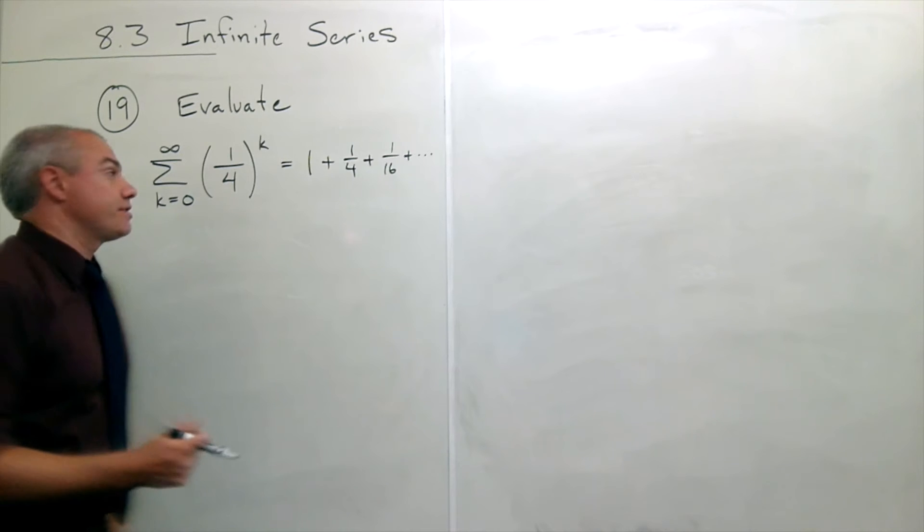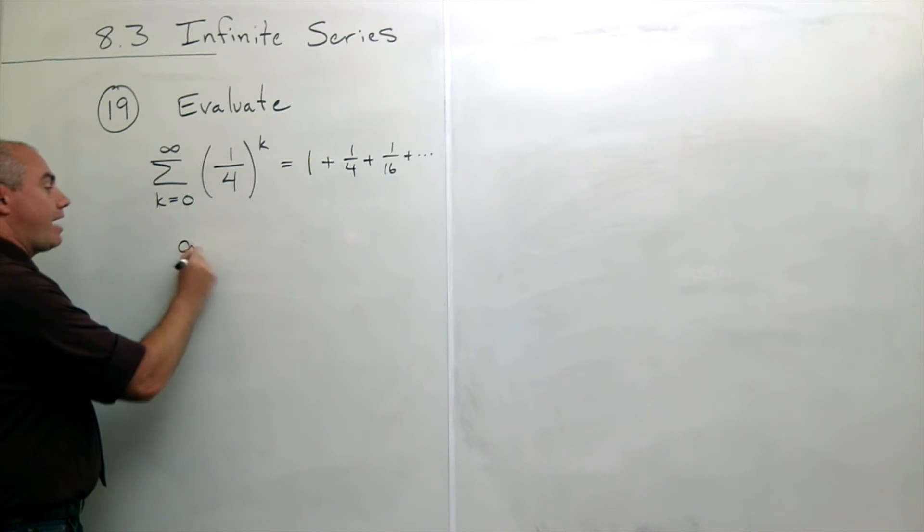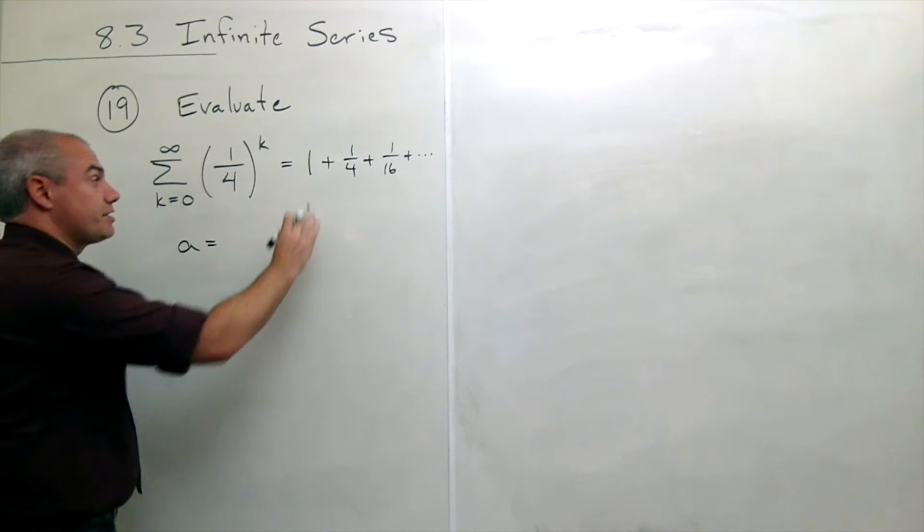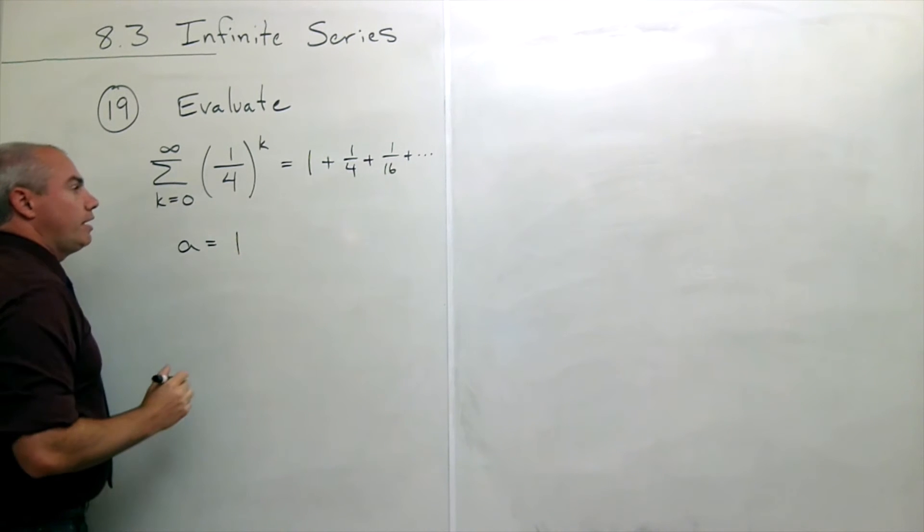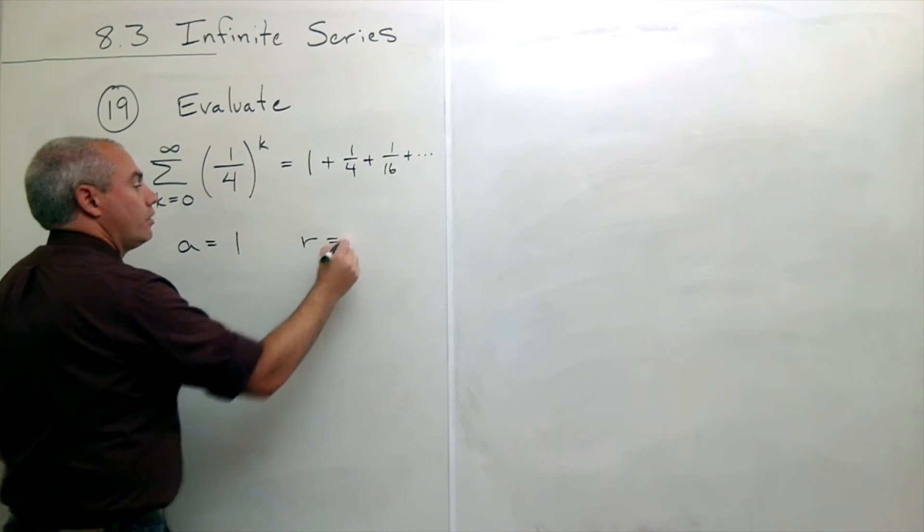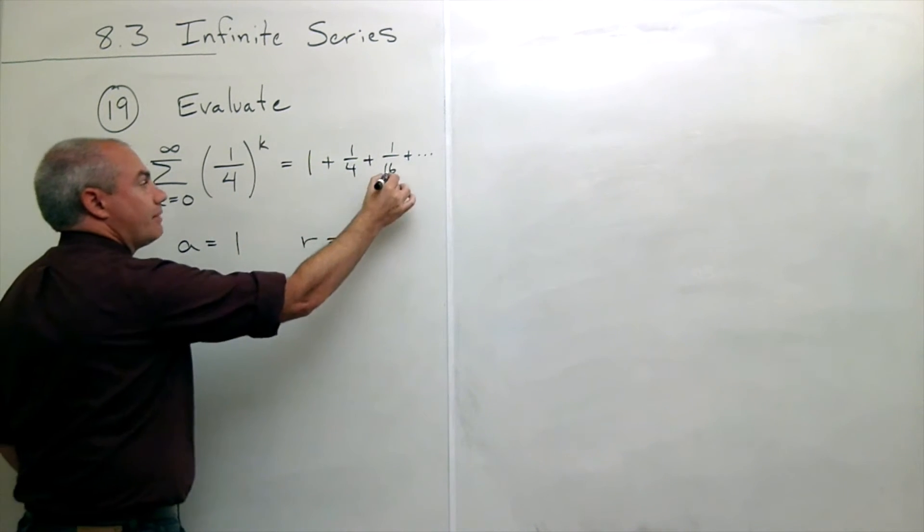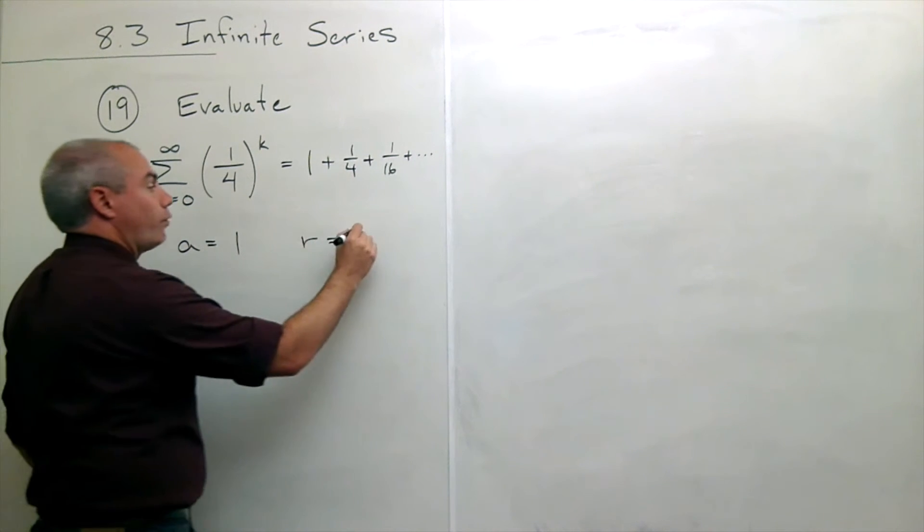In other words a is the first term of the series and r is what you multiply by each time to get the next term of the series. So in this case my a, the first term of the series is 1, and my r, what I'm multiplying by every time to get to the next term of the series is one fourth.